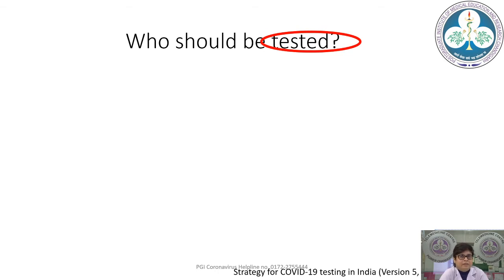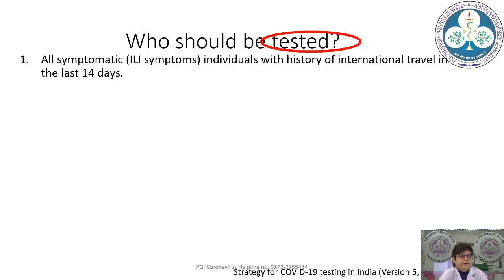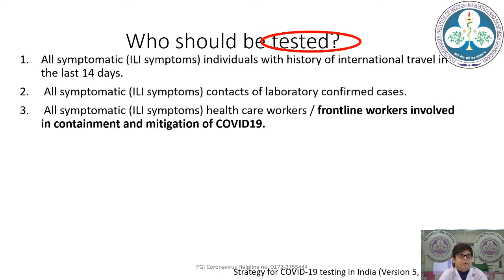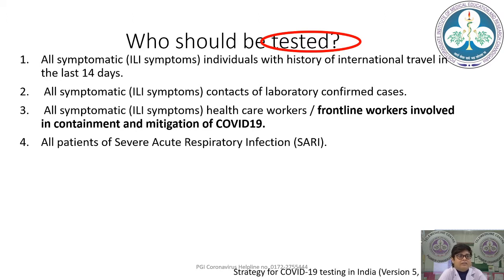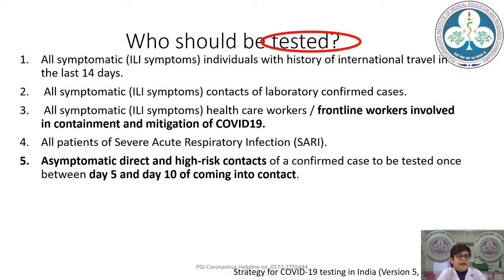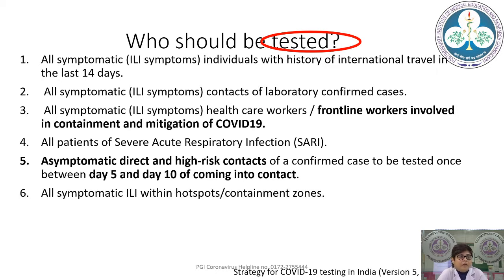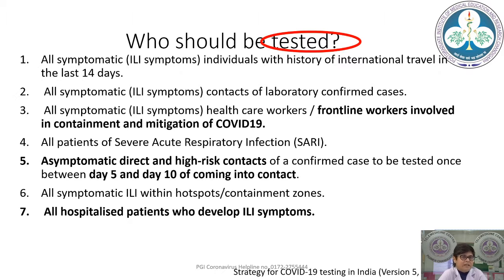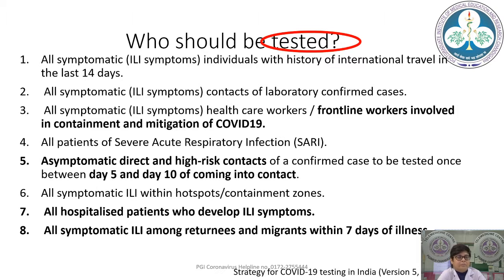Who should be tested by RT-PCR? All symptomatic patients with influenza-like illness — fever, cough, or respiratory distress — with travel history, contact with laboratory-confirmed cases, healthcare workers, frontline workers, or people from containment areas. All patients with SARI (severe acute respiratory infection requiring hospitalization), symptomatic high-risk contacts with comorbidities, and, per the May 18th guideline, testing on day 5 and day 10 of contact. All symptomatic ILI patients in hotspots, hospitalized patients developing ILI, and returnees from foreign countries or migrants within seven days of illness.